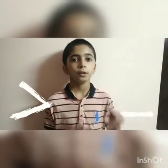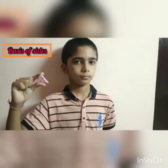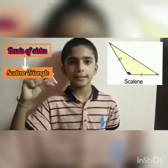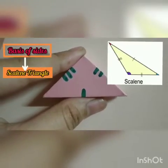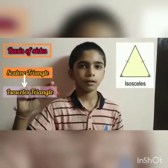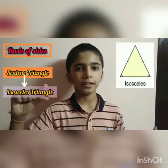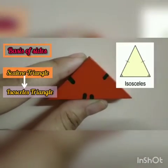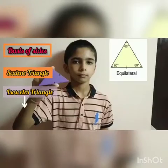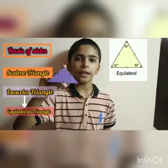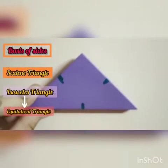There are 2 ways to classify triangles. First, based on sides: scalene triangle, isosceles triangle, and equilateral triangle.